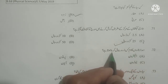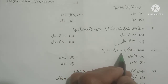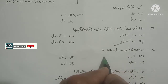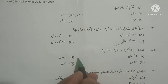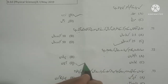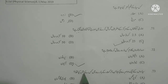Next question: Dumdar taaro ka dum kis zarre se milkar bana hota hai? The tail of a comet is made up of which particle? As you know, the tail of a comet is made of iron. Options given: electron, proton, neutron, iron — iron is correct.